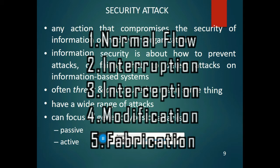The second one is interruption — sender to receiver, the flow is interrupted. The third one is interception — the source-to-destination data is diverted to a third party. That is called interception. A best example is wiretapping a phone call.